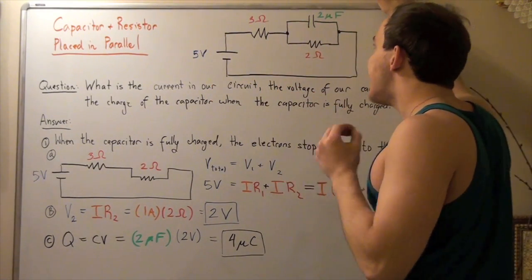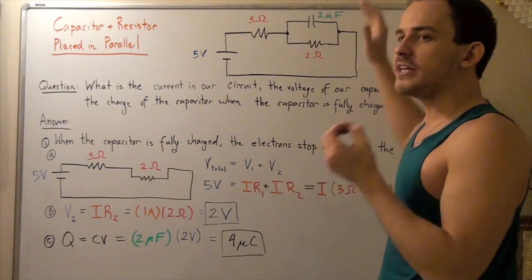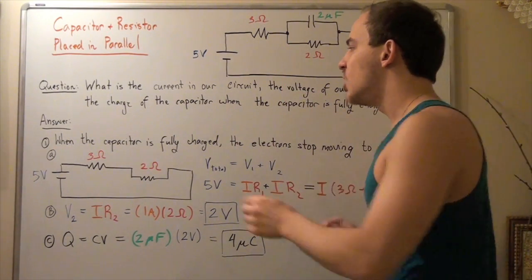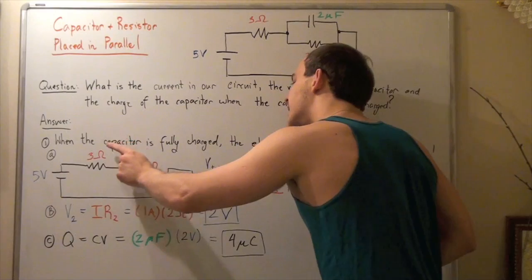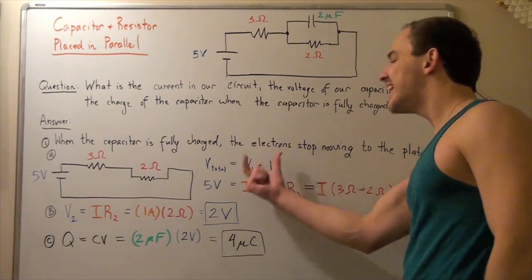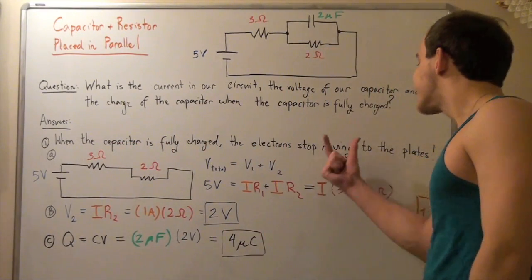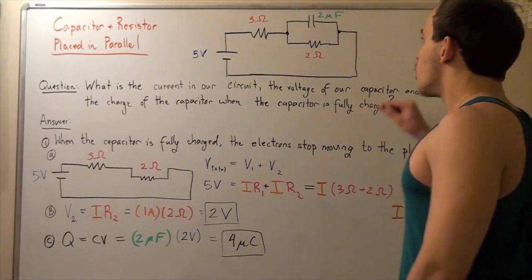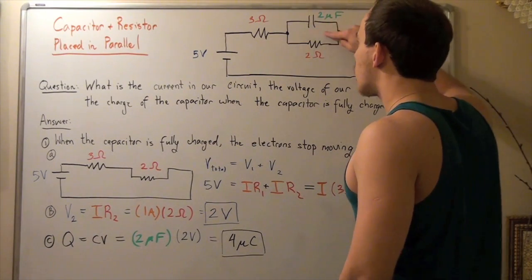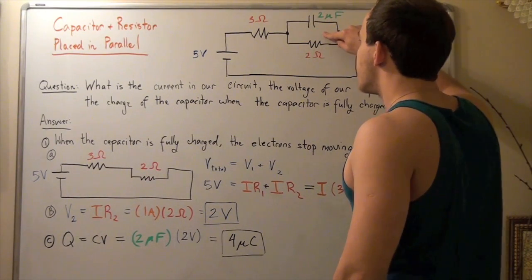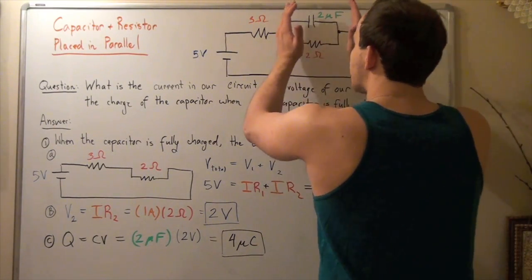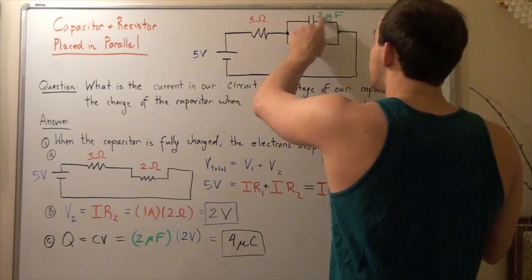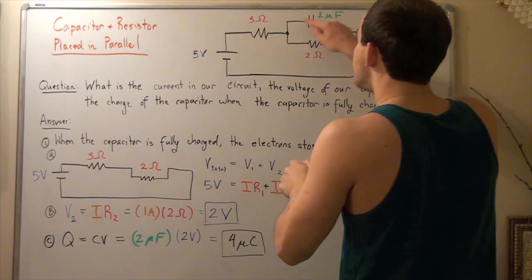When our capacitor is fully charged, what is the result? When the capacitor is fully charged, the electrons stop moving to the plates. In other words, when this capacitor is fully charged, that means the voltage difference between this point and this point is zero.